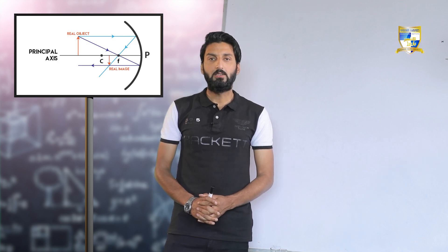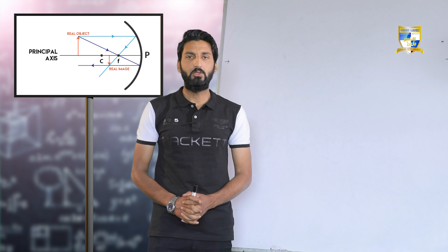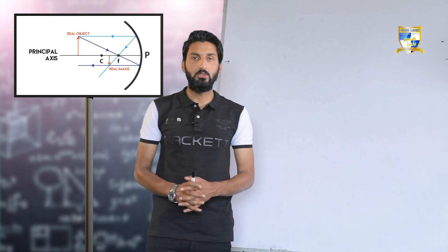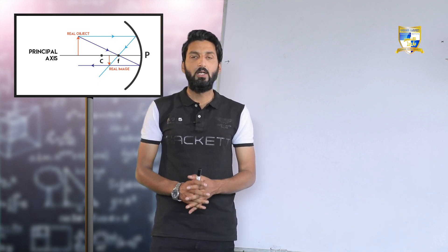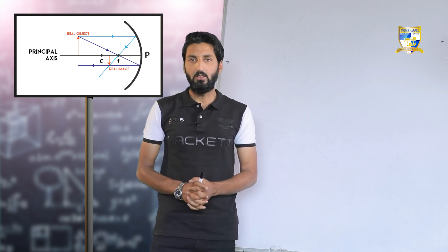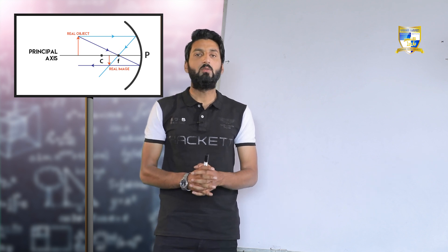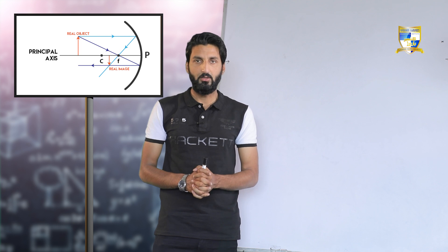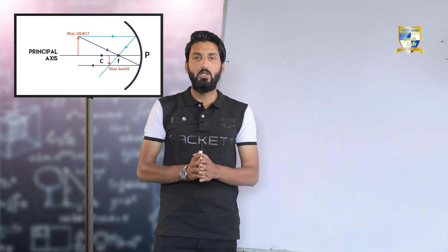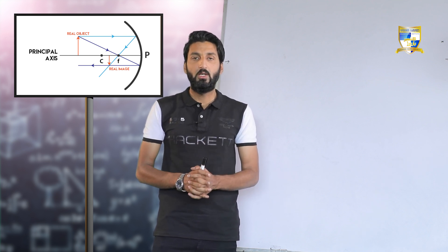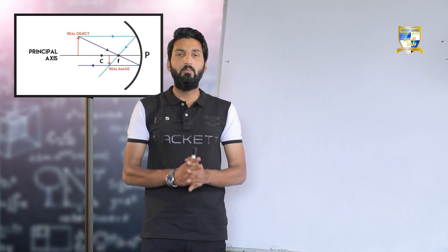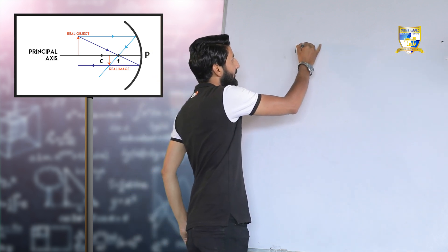In the last lecture we discussed the sign conventions for spherical mirrors. The significance of sign conventions is that they are used to get a numerical value, and that numerical value gives us the different characteristics of an image — like position and nature. That numerical value is calculated with the help of a formula called the mirror formula.